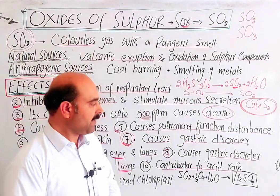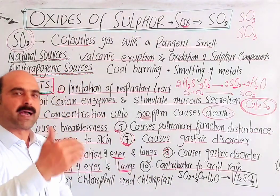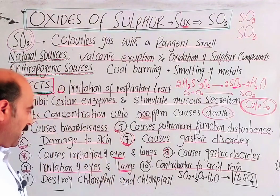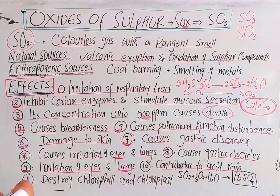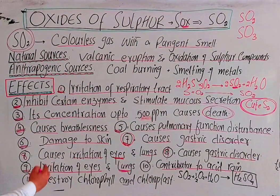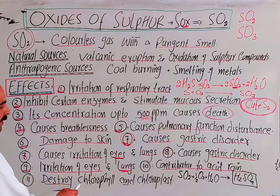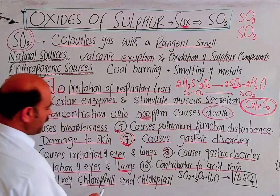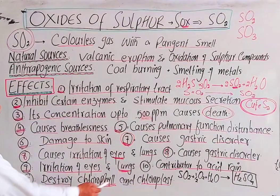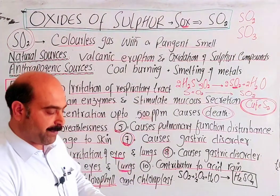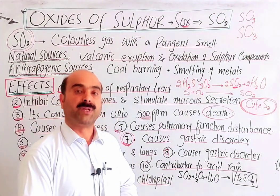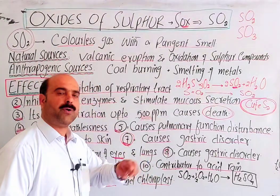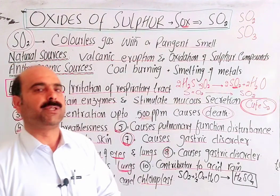Acid rain is one of the major adverse effects of sulphur dioxide and is an important topic to discuss. Sulphur dioxide also destroys chlorophyll and chloroplasts. Chlorophyll is the green pigment in leaves. When chlorophyll is destroyed, photosynthesis cannot occur, which is a very necessary process for plant life.